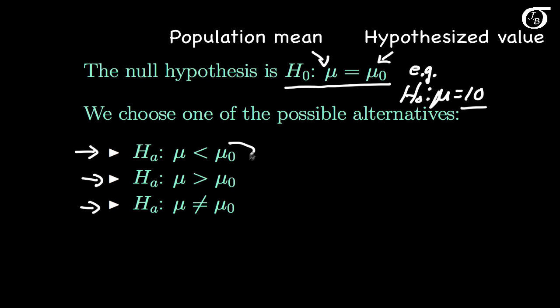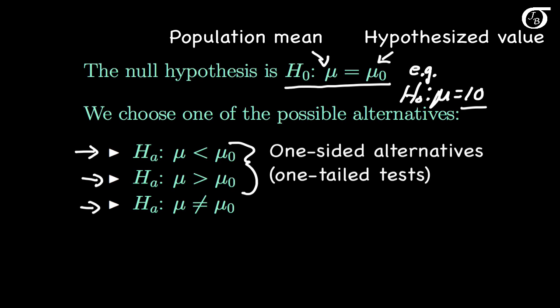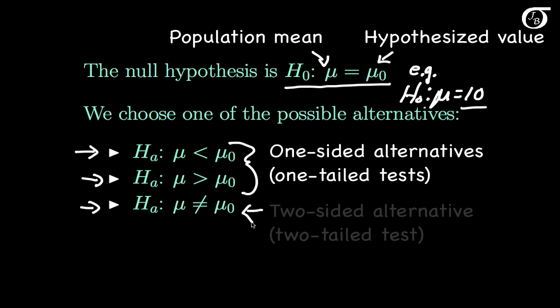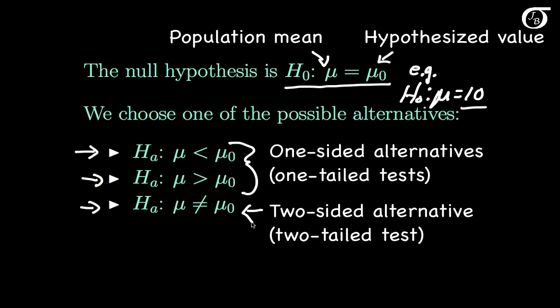We call the first two one-sided alternatives, and they lead to one-tailed tests. The third is a two-sided alternative, and that leads to a two-tailed test. As a rule of thumb, choose a two-sided alternative unless you have a very strong reason to be only interested in one particular side.